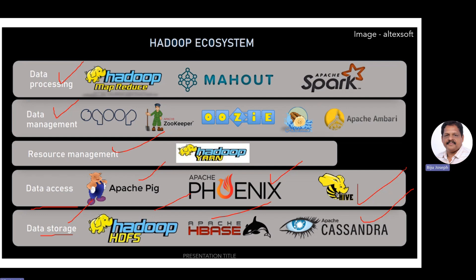Then we have resource management. It is very important to take care of all the resources. That's where we have YARN, which is called Yet Another Resource Negotiator. Coming to data management — we deal with petabytes of data, so data quality and governance is very important. We have Zookeeper and Apache Ambari, which take care of data management.